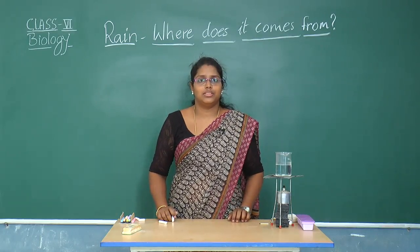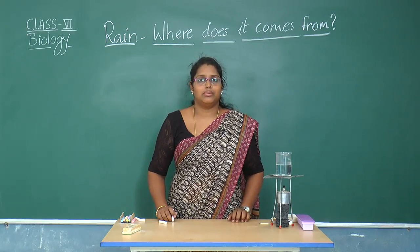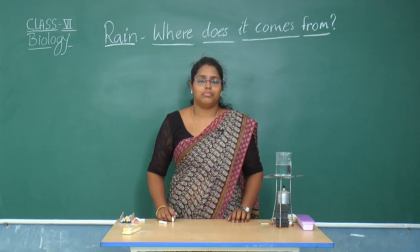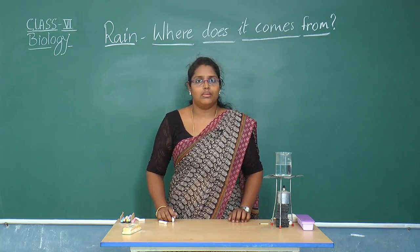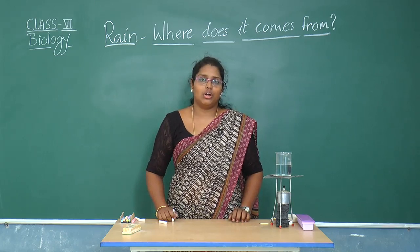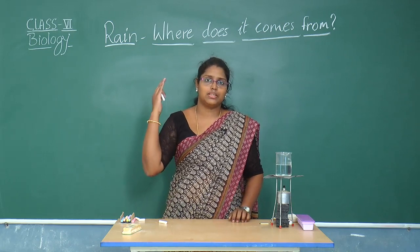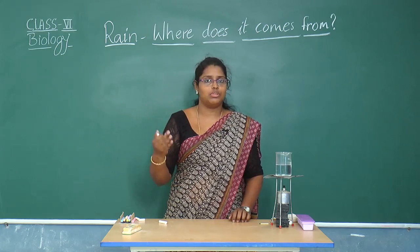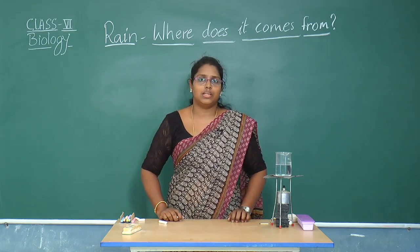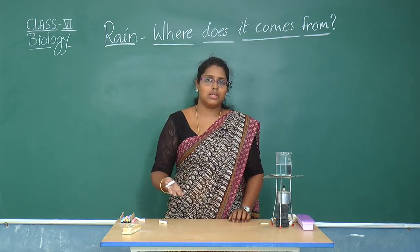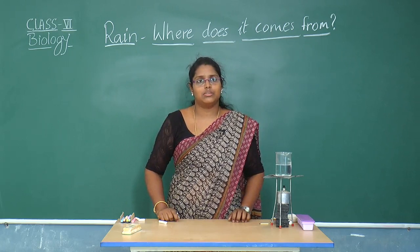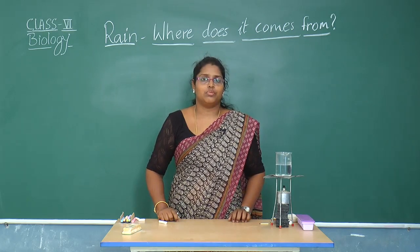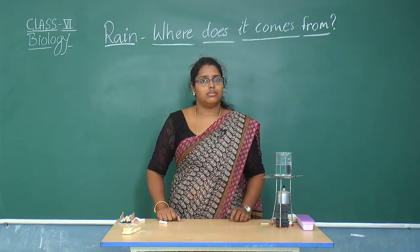Welcome to another session of biology. Today we shall be discussing about rain — where does it come from? We say it is raining when water from the sky descends onto the ground. Water present in the atmosphere comes down to the surface of the earth. By the end of the session we shall know how it rains, when it rains, and how water goes up into the atmosphere.